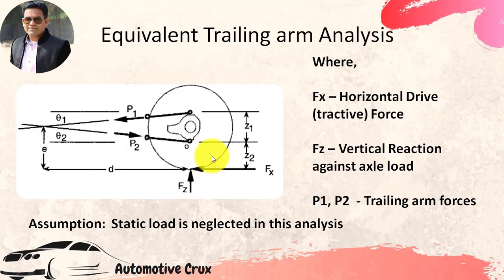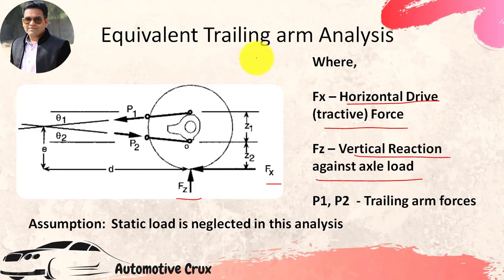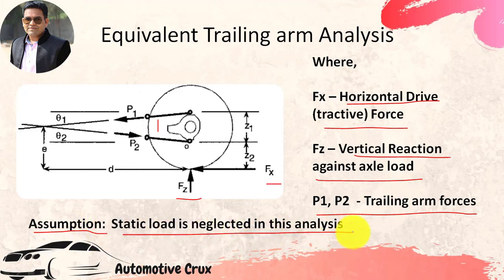In this figure, you can observe that this geometry indicates a rear-drive vehicle. Fx indicates the horizontal drive force — you can also call it the tractive force. Fz indicates the vertical reaction against the axle load, or the vertical reaction of forces imposed due to the vertical loading component. P1 and P2 are trailing arm forces acting on the trailing arms as denoted here. In this analysis, we have considered the assumption that static load is neglected.